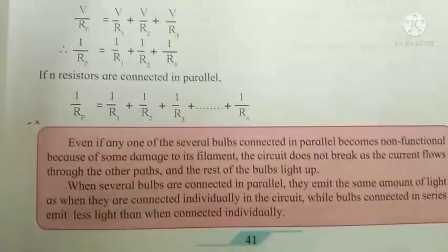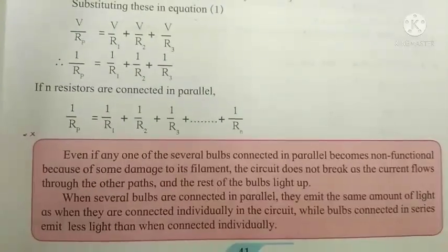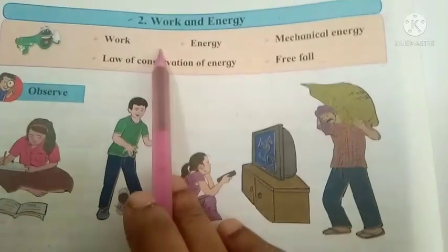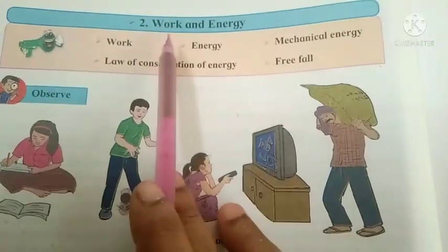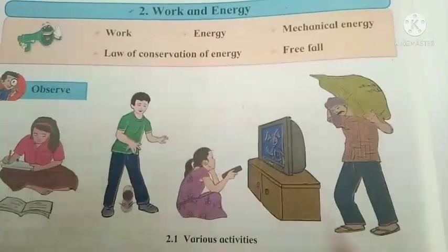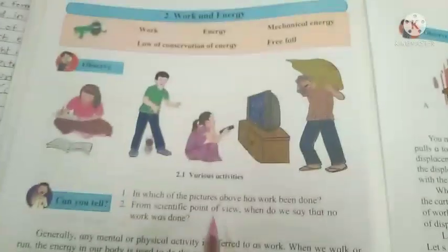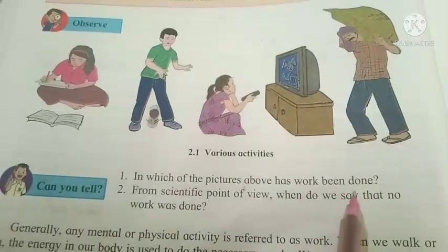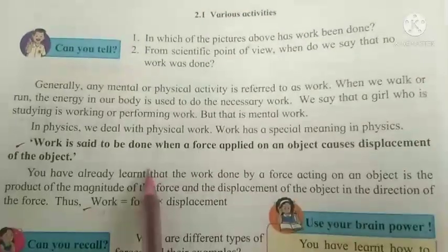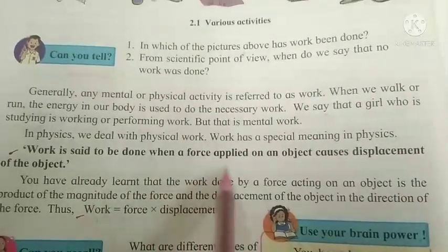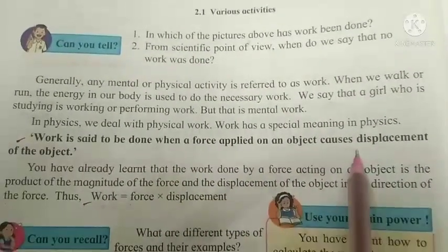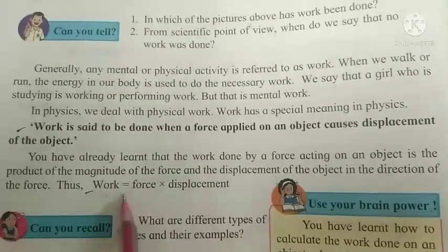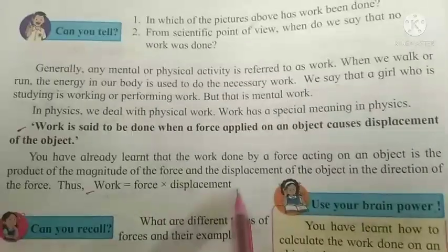So we stop here — this is Activity Number 5. Now we are going to discuss Activity Number 6, which is Work and Energy. Observe these pictures — in which of these pictures has work been done? Work is done when the force applied on an object causes the displacement of that object. Work equals force into displacement.